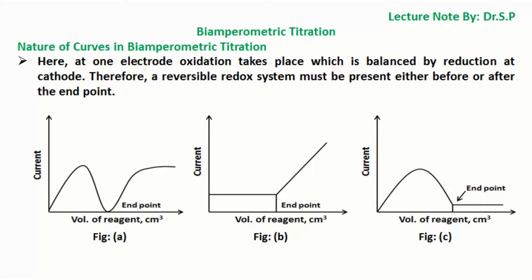Nature of curves in bi-amperometric titration. Here, at one electrode oxidation takes place which is balanced by reduction at cathode. Therefore, a reversible redox system must be present either before or after the end point.